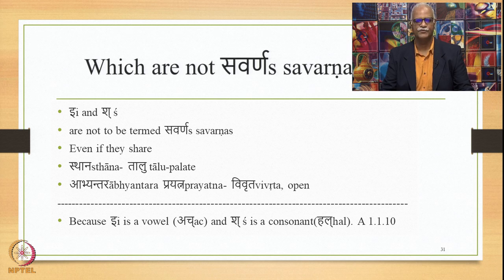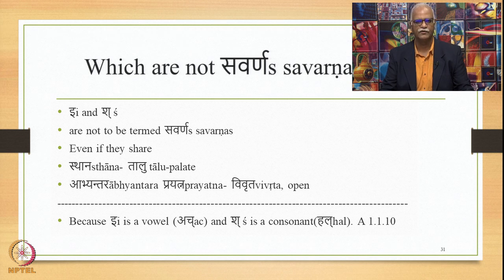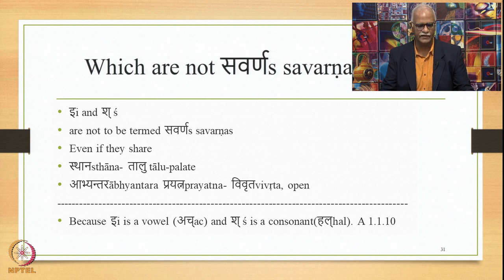The next set not to be termed Savarna is E and Sh. E is a vowel (Ach), Sh is a consonant (Hal), and they are not to be termed Savarna even if they share Sthana and Abhyantara Prayatna. The Sthana of E and Sh is Talu, and the Abhyantara Prayatna of both is Vivruta — still they are not termed Savarna following 1.1.10, which says a vowel and a consonant cannot be termed Savarna even if their place and effort of articulation are the same.